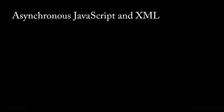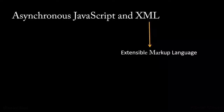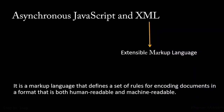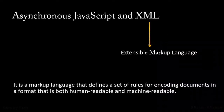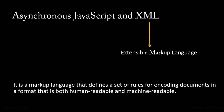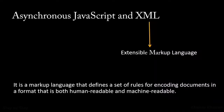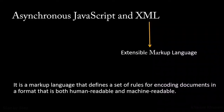AJAX stands for Asynchronous JavaScript and XML. XML is nothing but Extensible Markup Language — it is just a simple text-based format. Before, most websites used XML to transfer data, but now JSON has come into play and most modern websites use JSON. You can use either JSON or XML to transfer data. XML is a markup language that defines a set of rules for encoding documents in a format that is both human-readable and machine-readable.